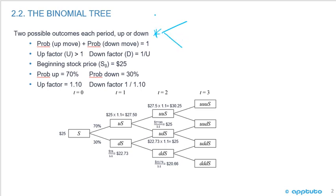Think bicycle - two wheels. Binomial tree - two outcomes. One is up and one is down.